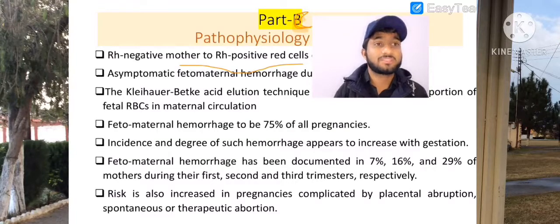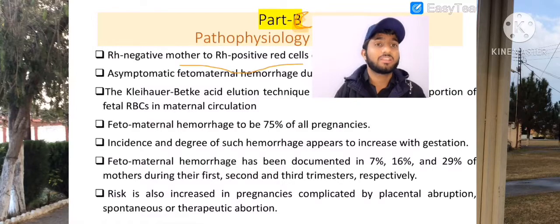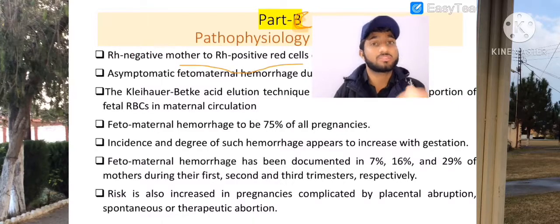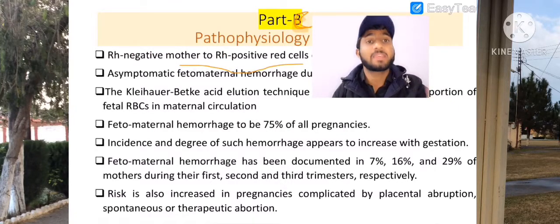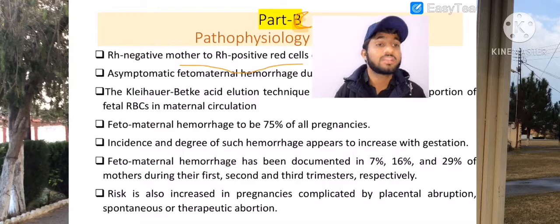Because when the pregnancy duration is increased beyond 40 weeks, it means the pregnancy is abnormal, and abnormal pregnancies can stimulate or cause HDN. Fetal maternal hemorrhage has been documented in 7%, 16%, and 29% of mothers during their first, second, and third trimester respectively.